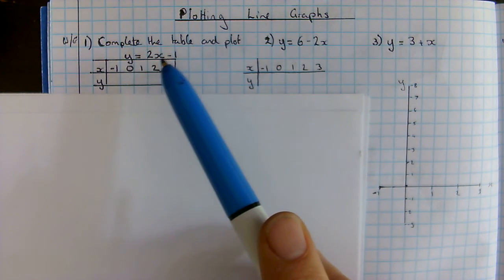Here are the completed tables of values and the graphs. For d onwards, where you weren't given a table of values, I've used what I thought were going to be the easiest numbers—zero, two, and four—and used those to plot my lines rather than having the full range of numbers. It just makes it quicker for you to draw them, and that's absolutely fine. Just make sure that all of your graphs are labeled.